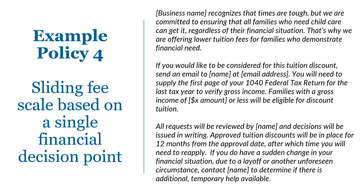Example policy 4 is a sliding fee scale based on a single financial decision point. '[Business name] recognizes that times are tough but is committed to ensuring all families who need child care can get it regardless of their financial situation. That's why we are offering lower tuition rates for families who demonstrate financial need. If you would like to be considered for this tuition discount, send an email to [contact name and email]. You will need to supply the first page of your 1040 federal tax return for the last tax year to verify gross income. Families with a gross income of [amount] or less will be eligible for a discount tuition. All requests will be reviewed by [reviewer] and decisions will be issued in writing. Approved tuition discounts will be in place for 12 months from the approval date, after which time you will need to reapply. If you have a sudden change in your financial situation due to a layoff or another unforeseen circumstance, contact [person] to determine if there is additional temporary help available.'